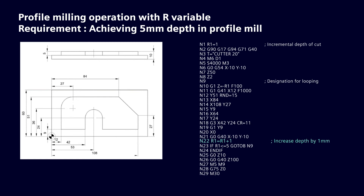Since the previous value of R1 was 1 mm, we now increase it by 1, which means the present value of R1 becomes 2 mm. In N23 block, compare the value of R1 using the IF condition. The syntax will be: IF R1 <= 5 GOTO N9. The present value of R1, that is 2 mm, will compare with 5 mm. Since it is less than 5 mm, the program restarts from block N9 for the second depth. This process continues until R1 reaches 5 mm. After 5 passes, R1 becomes 5 mm, the IF condition fails, the loop exits, and the program continues from N24 to M30.